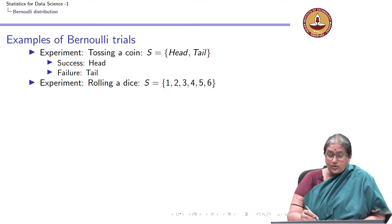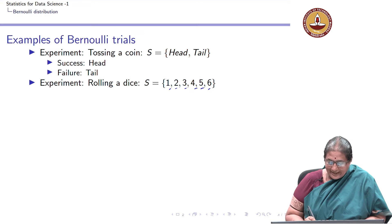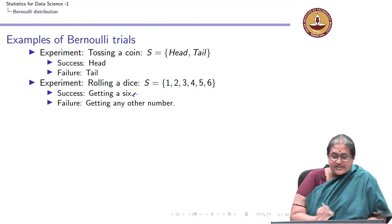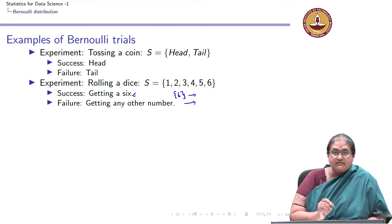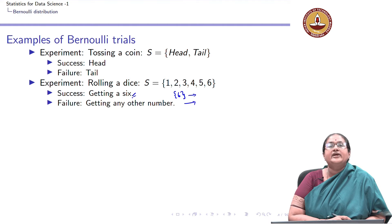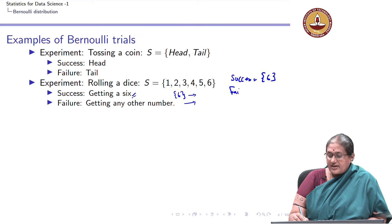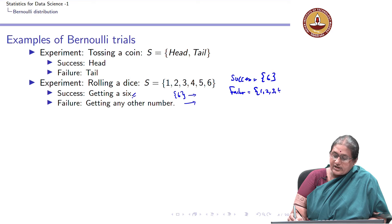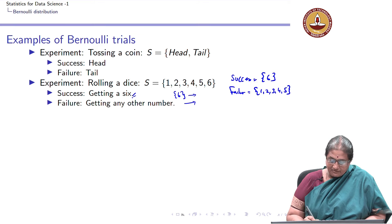Now let us roll a die. The outcomes are 1, 2, 3, 4, 5, 6. I can define success to be getting a 6, in which case the success outcome is the singleton {6} and failure is any other number. So I can define an event of getting a 6 as a success and getting any other number as a failure, making this a Bernoulli trial where I define what is success and failure.